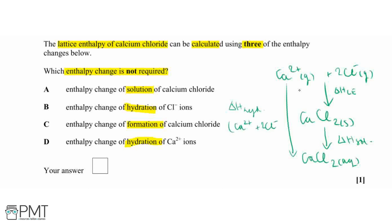And then what we can see from this cycle is that we don't actually need the enthalpy change of formation of calcium chloride in order to work out this lattice enthalpy, because we've not got our calcium and our chlorine in elemental form in order to form that solid. Therefore, our answer is going to be C.